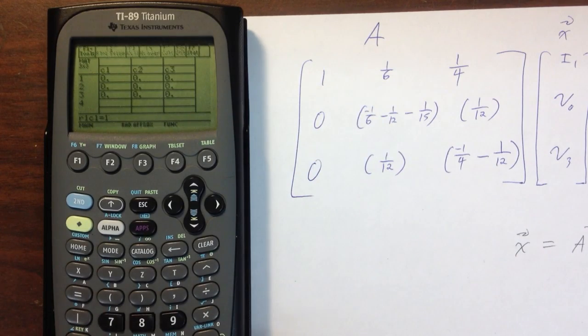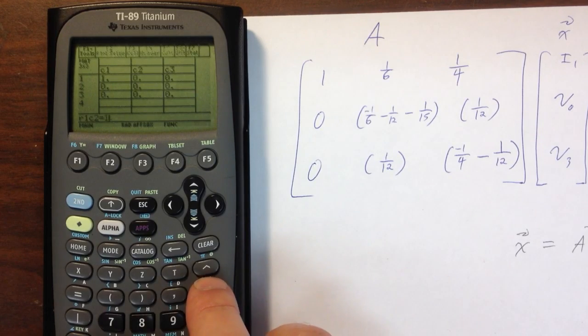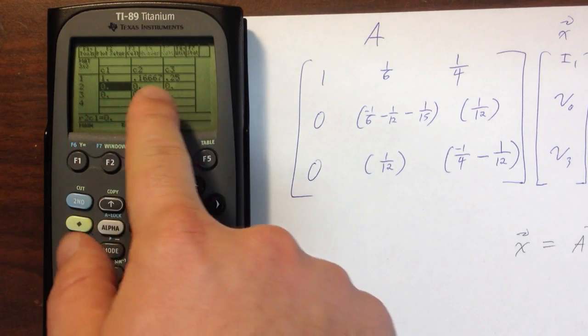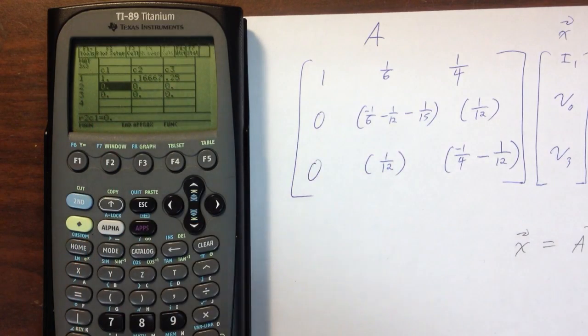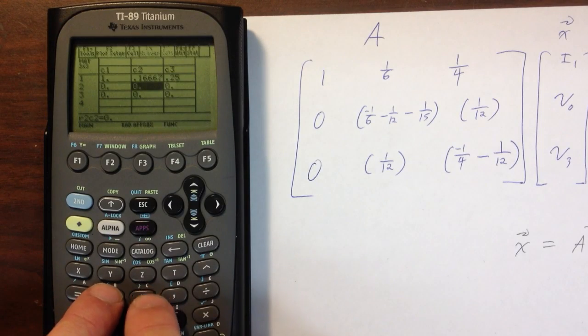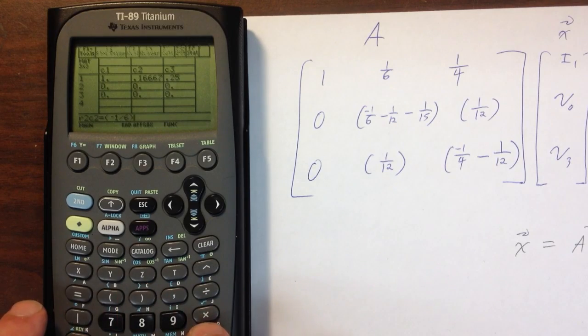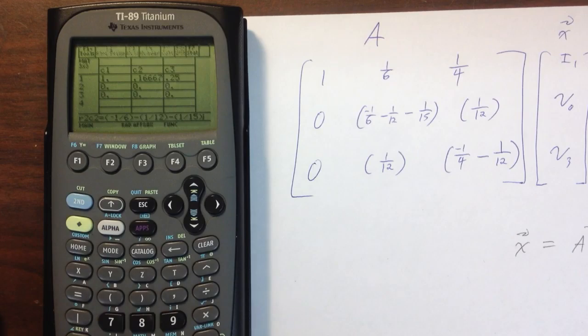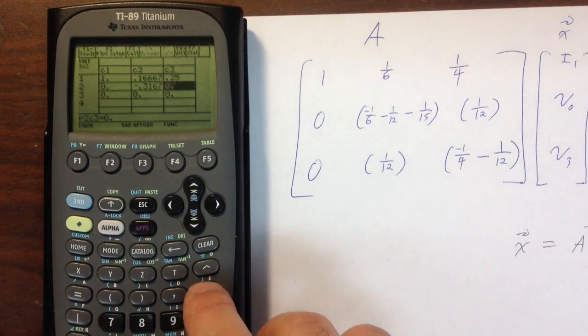Now I've got my 3 by 3 matrix in the data editor, so I can start putting in information. I'm going to put in 1, hit enter. Now for 1/6, I just put 1 divide by 6, hit enter. For 1/4, I just put 1 divide by 4, hit enter. Notice how each time I push enter it just advances me on. You can actually get really fast at putting stuff in. Next position is 0. Position after that is minus 1 over 6, minus 1 over 12, minus 1 over 15. Notice how I put that in. I didn't simplify anything. I just put it in, lots of parentheses. When I push enter, the calculator simplifies that for me.